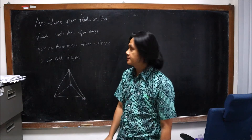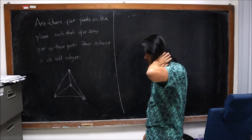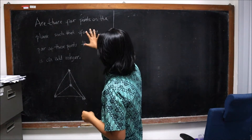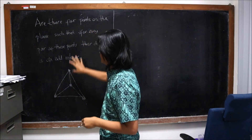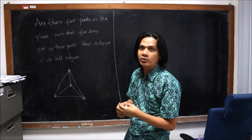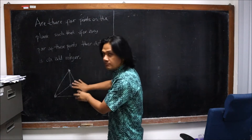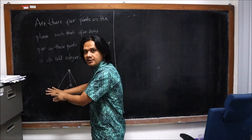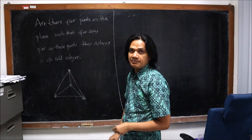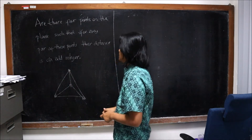All of them are odd integers. To answer this question, suppose there are four such points that satisfy the condition of the problem. Then by doing some translation, we can assume that one of the points is the origin, the point (0, 0). We just need to translate until it reaches the origin, because the translation does not change the distance between any two points.